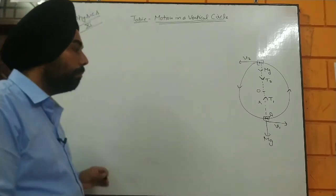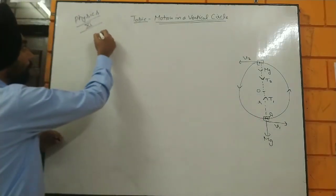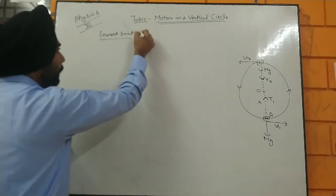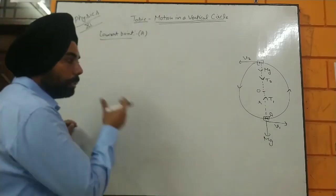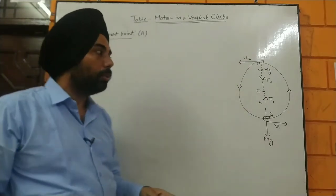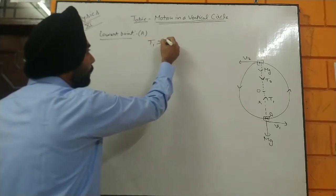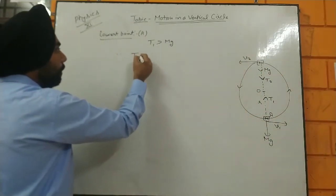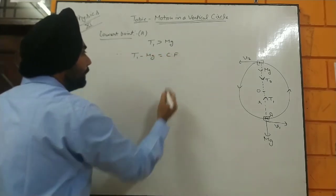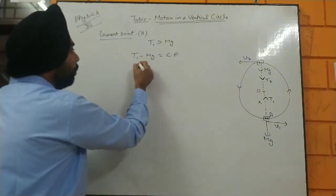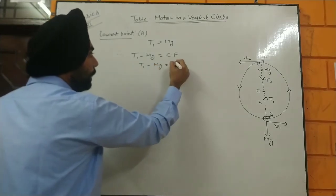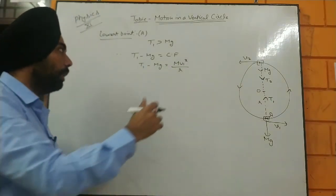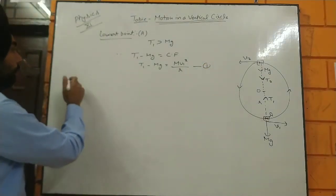First we are talking about the lowest point, which is point A. Obviously if that body is moving in a circular path, T1 is going to be greater than the weight because it also needs to circulate the body. Therefore T1 minus mg is going to provide the necessary centripetal force. So the centripetal force equation is: T1 minus mg equals mv1 squared upon r. We mark that as Equation 1.